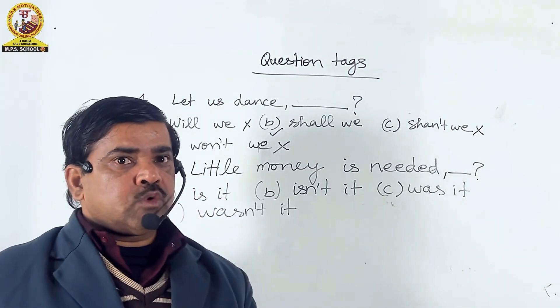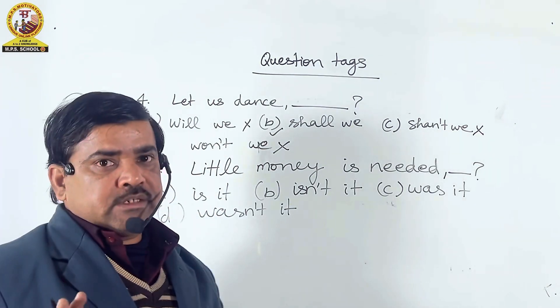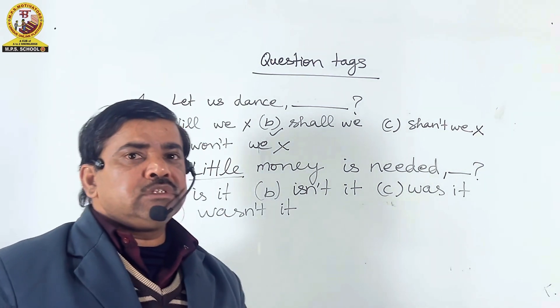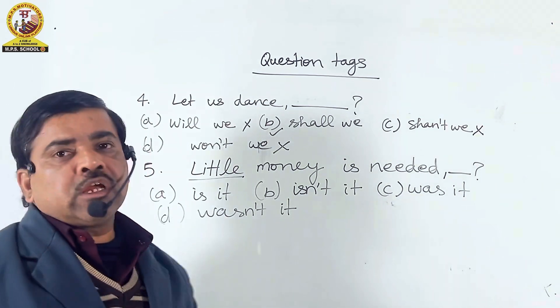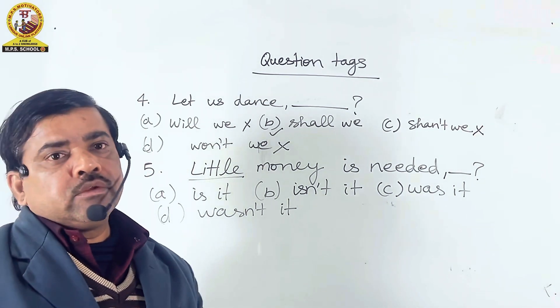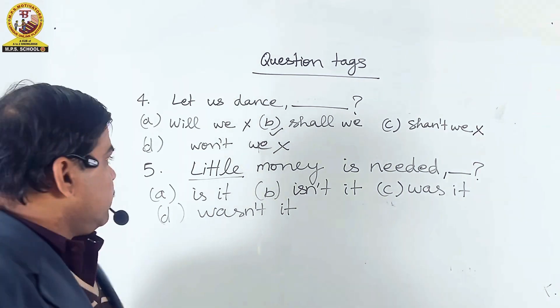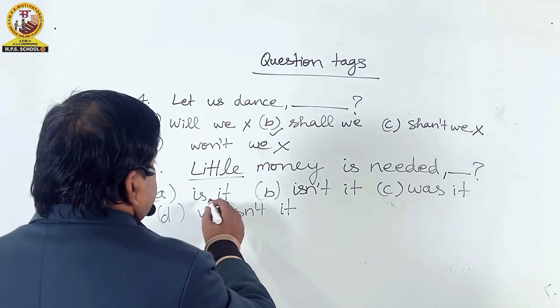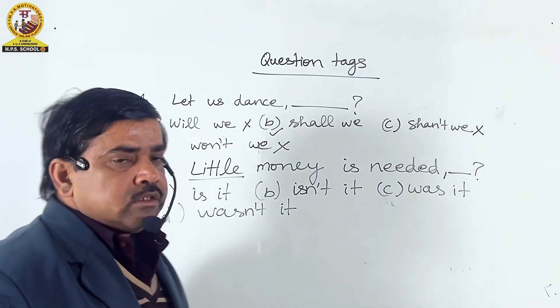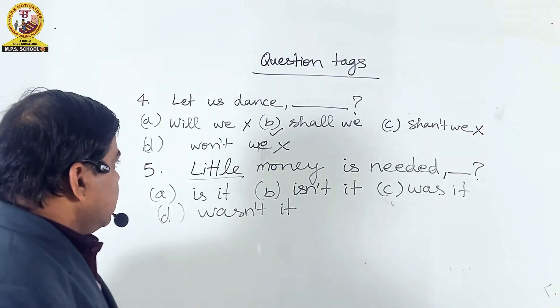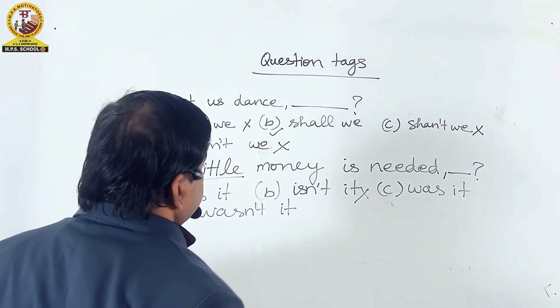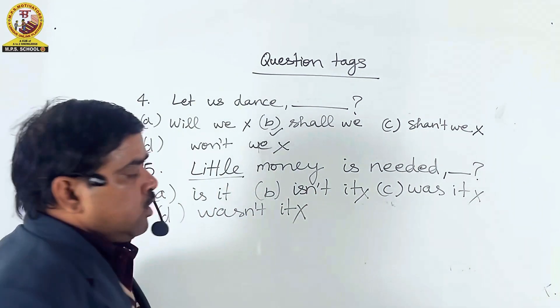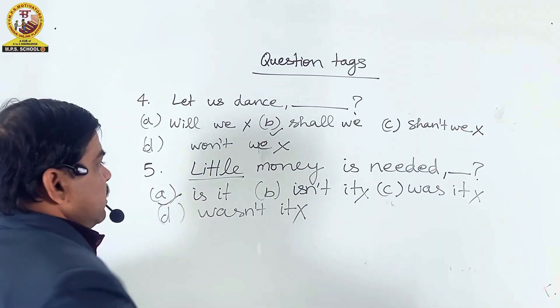Friends, our fifth question is: Little money is needed. Here, the word little is already in the negative sense. Little means no keber-aber. So we will use a positive question tag. So here, we see for little, we use it as the pronoun, subject of the question tag. And isn't it is not possible here. Was it is also not possible here. Wasn't it is also not possible here. So the right option is A, is it.